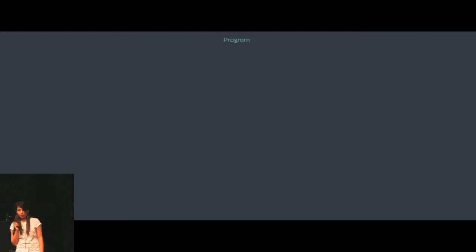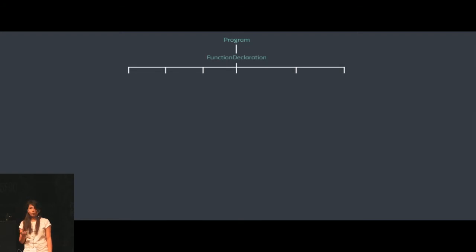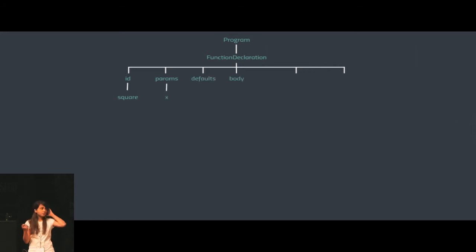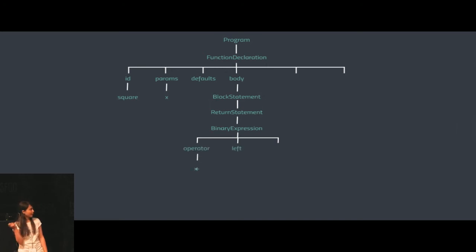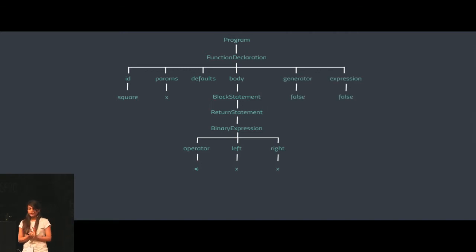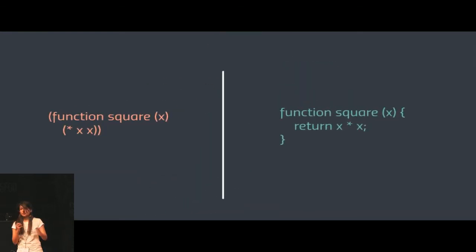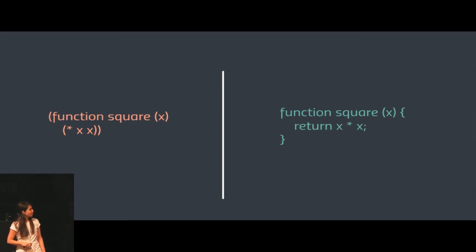The AST for this Lispy Script code starts with 'program', which has a function declaration statement where the ID is 'square'. The parameters are x, and the body is a block statement. Since there was just one expression in the body, it is also the return statement, which is a binary expression where the operator is multiplication and the left and right operands are x and x. This is what the Lispy Script code compiles to in JavaScript: function square with parameter x returns x times x.